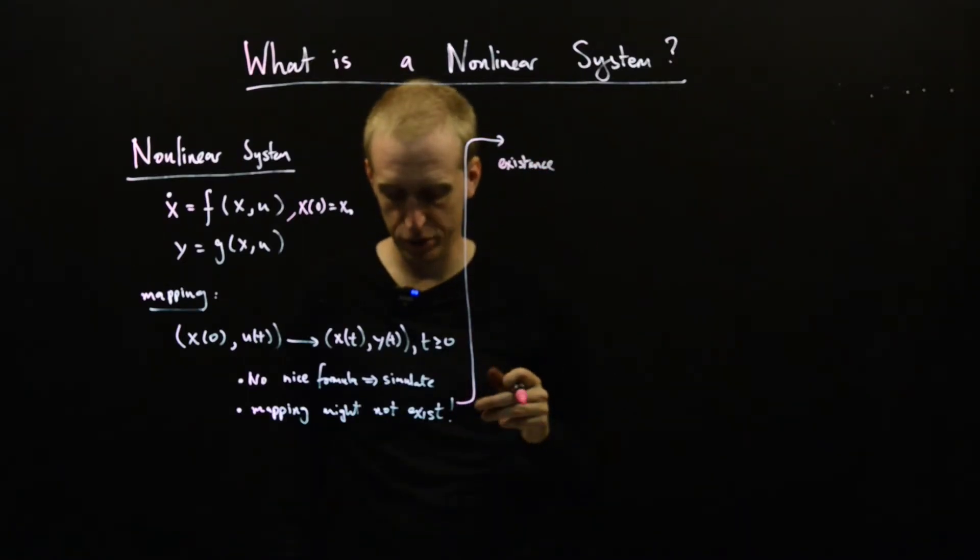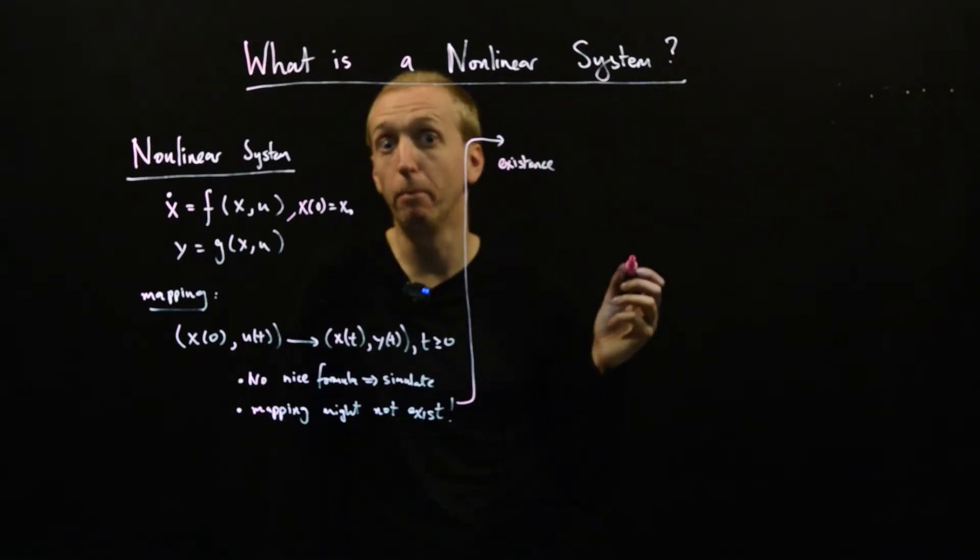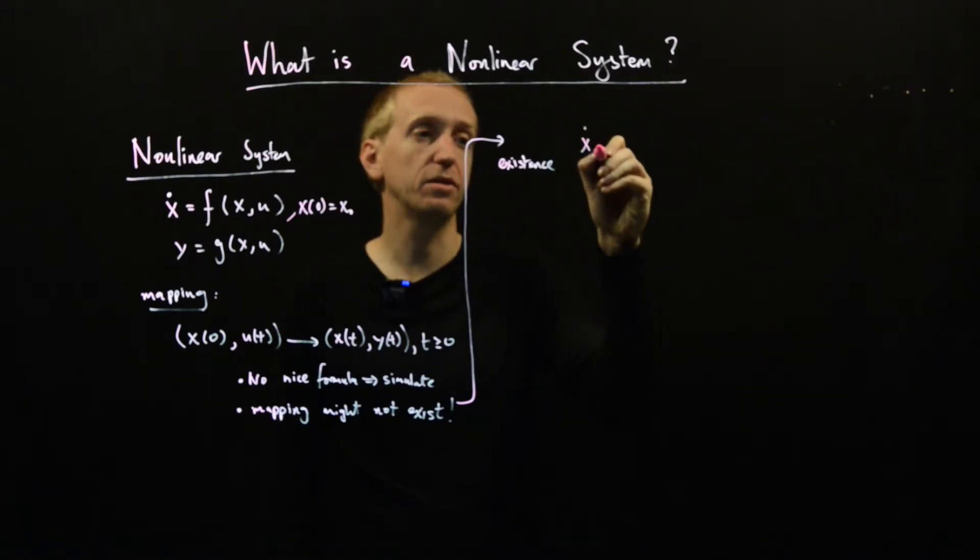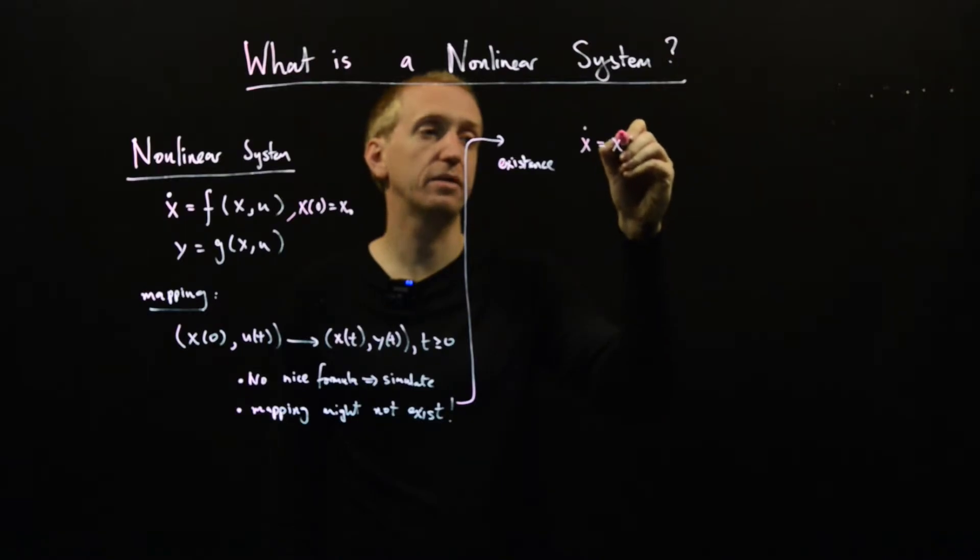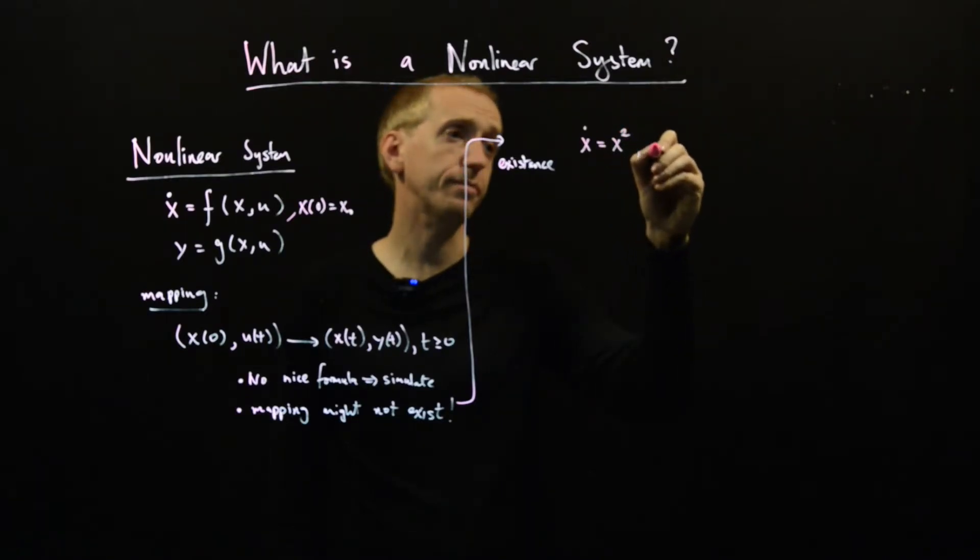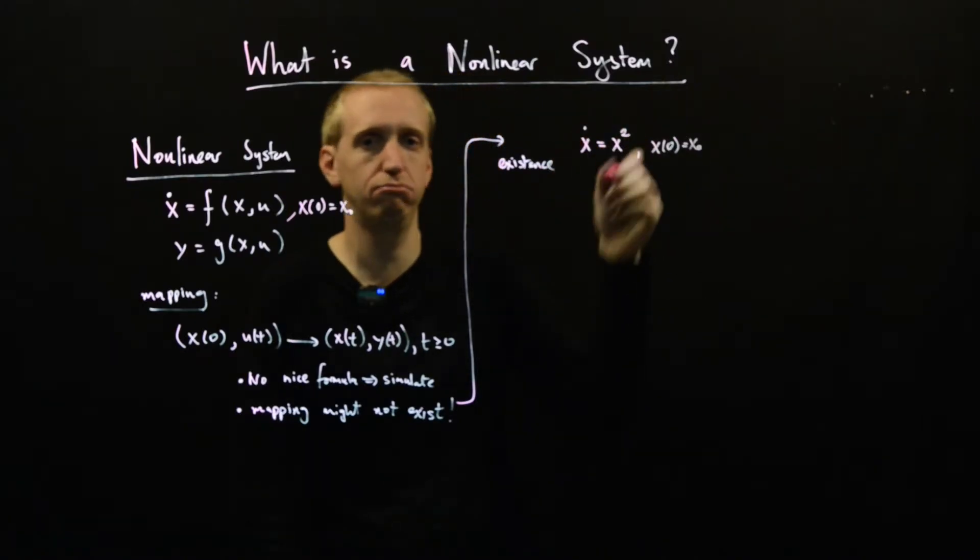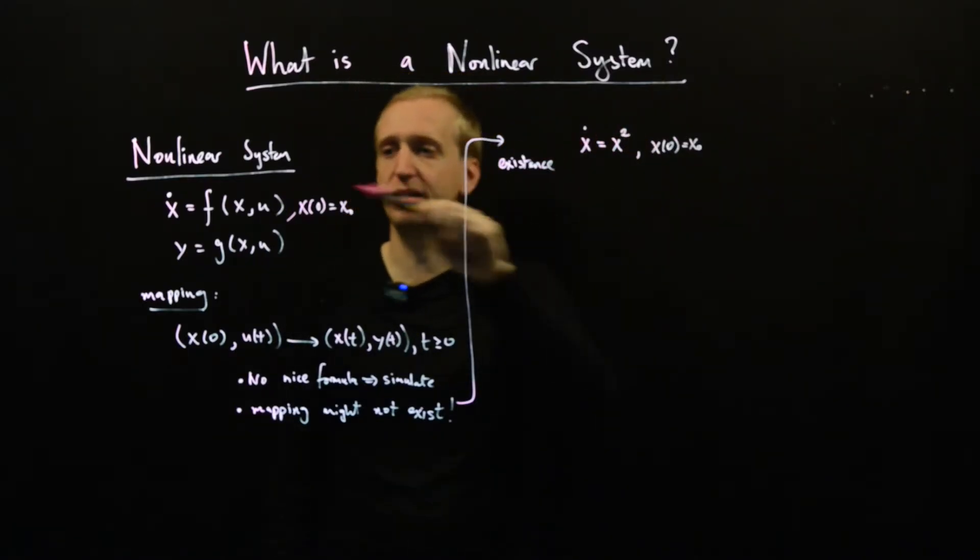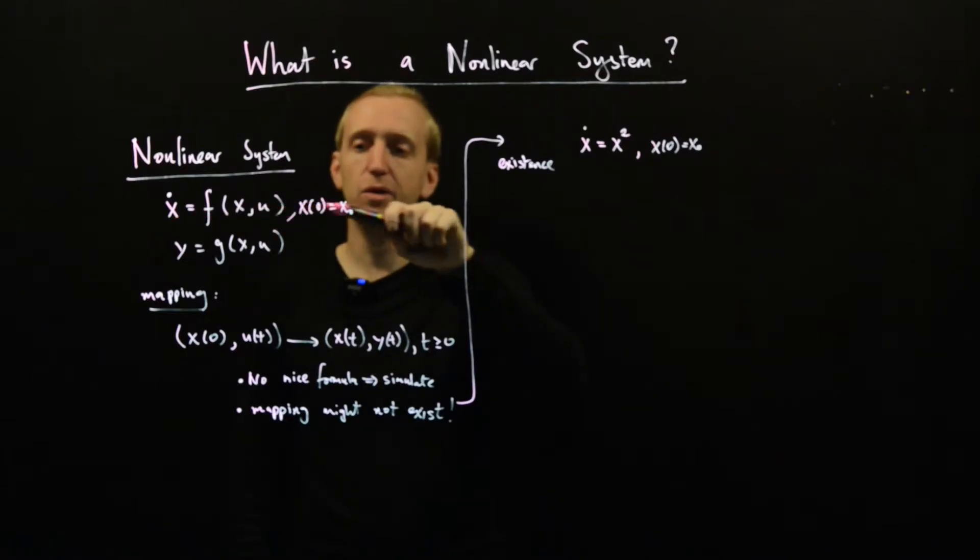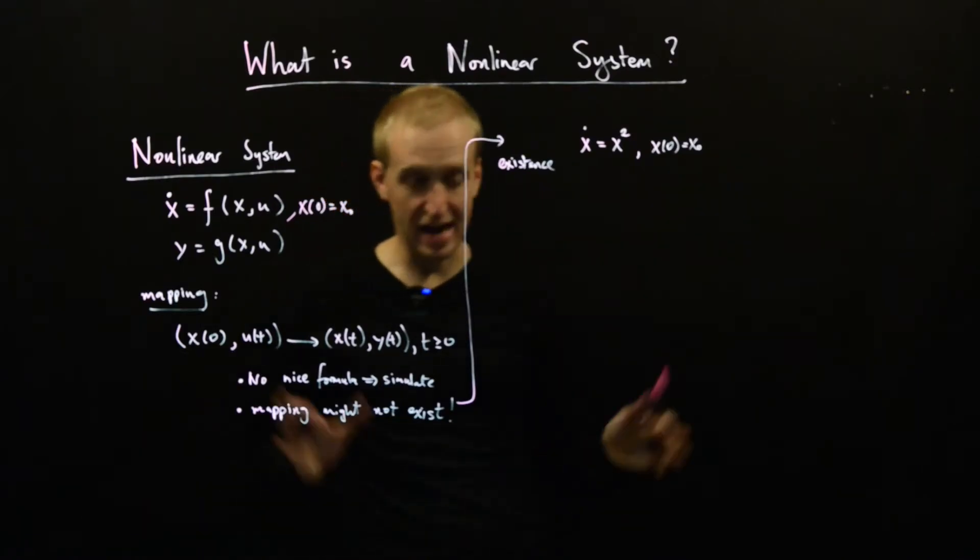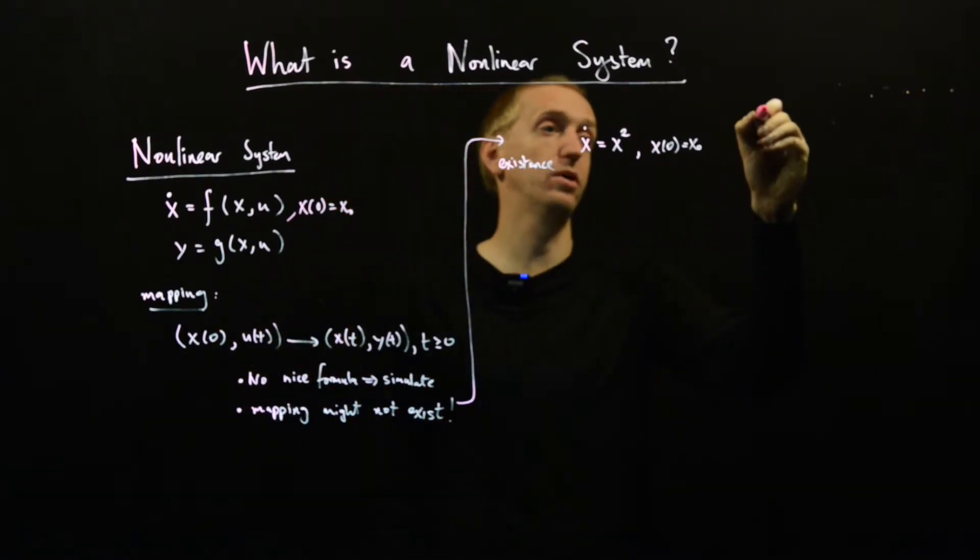So this problem of existence can actually be demonstrated with a very simple nonlinear system. Let's say x dot is equal to x squared, and we'll just set some initial condition here. So we've got no inputs to this system, but it's clearly of this form here with u equal to zero. Our function is just x squared. So what happens if we simulate this?